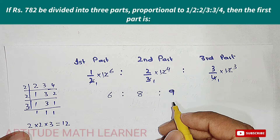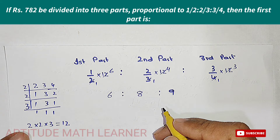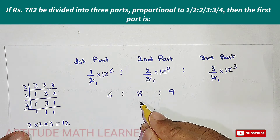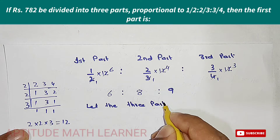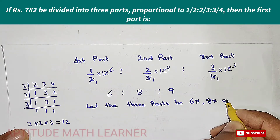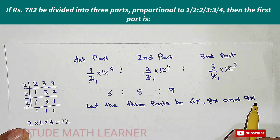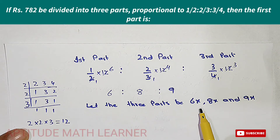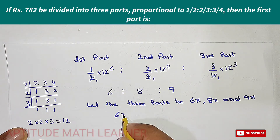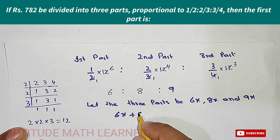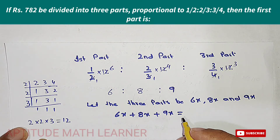Now let the three parts be 6x, 8x, and 9x. These represent the ratio shares. We set up the equation: 6x + 8x + 9x equals the total amount.